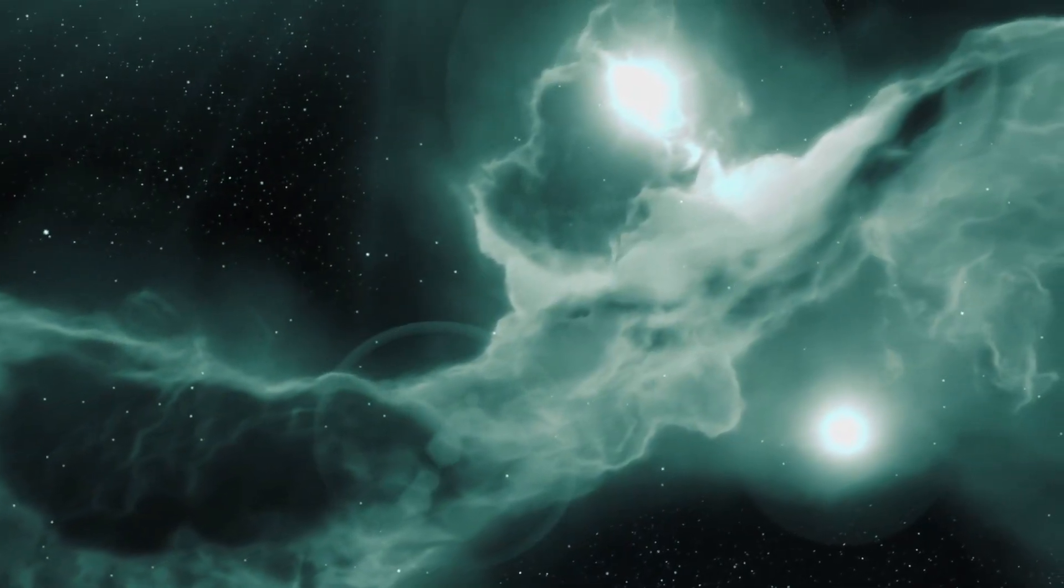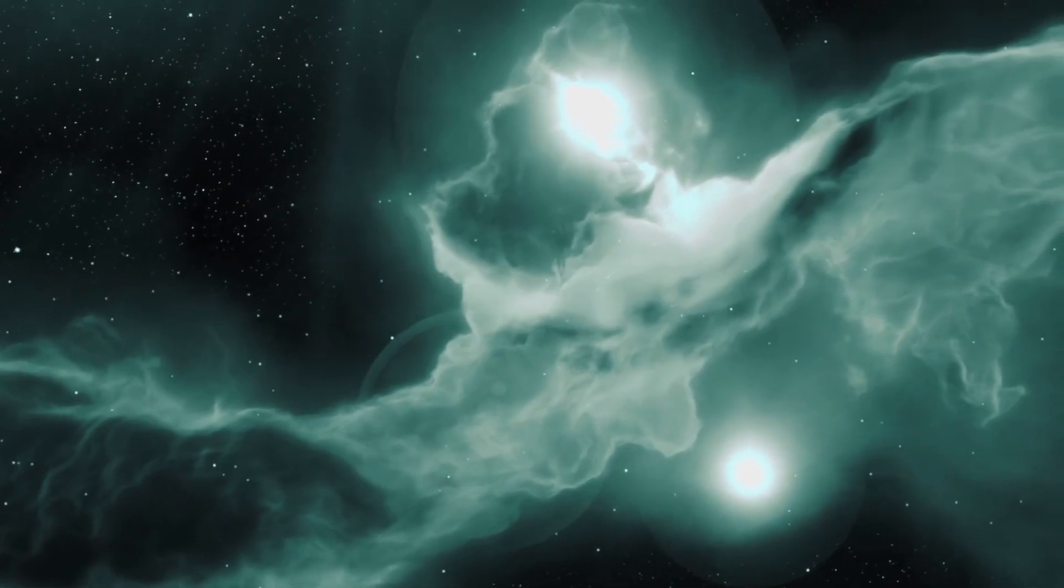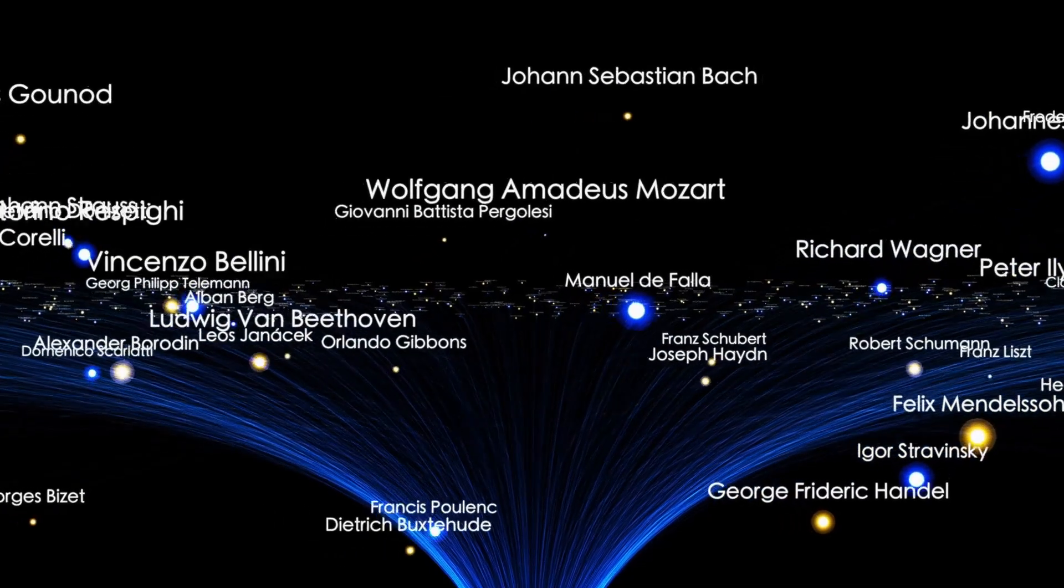At that distance, sunlight is weak, and most comets remain dormant. Yet 3I Atlas was already shedding gas and dust, glowing faintly against the dark.